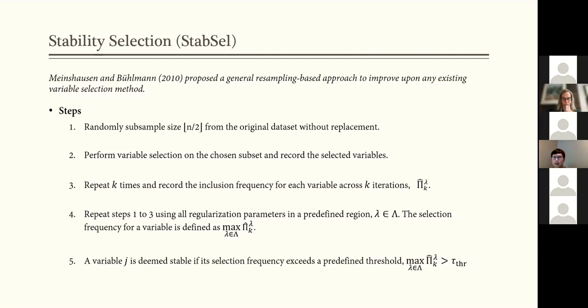So a variable j is deemed stable if this inclusion frequency exceeds a predefined threshold. And with this procedure, you can derive some theoretical bounds on the number of noise variables you end up selecting.